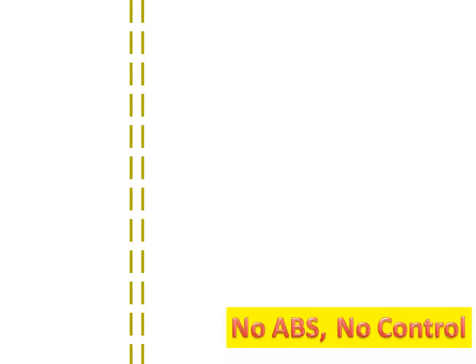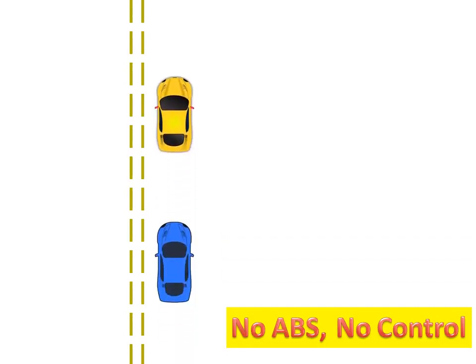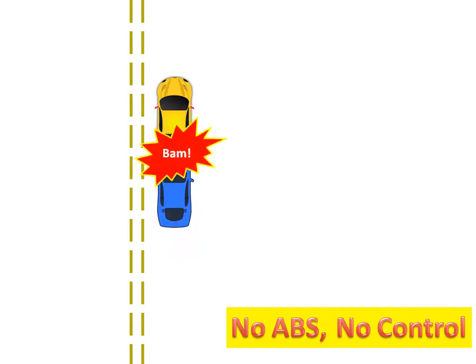Therefore, decreased stopping distance is not guaranteed by ABS — it is a secondary effect. Without ABS there will be no control. ABS has been proven to reduce the risk of crashing when used on typical road surfaces like asphalt or concrete.